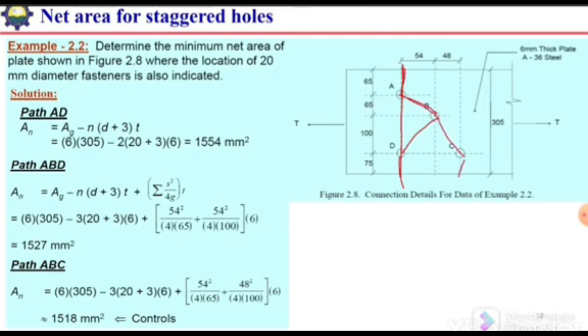First, the net area for path AD. For path AD we have these two holes. The gross area—we know the total width which is 305 for this plate and its thickness is 6 millimeters. Six multiplied by 305 gives us the gross area.